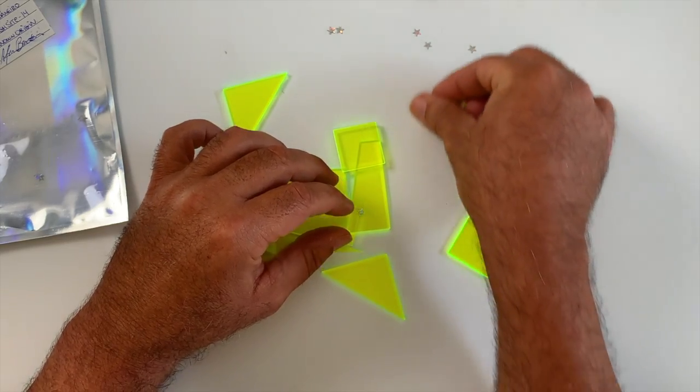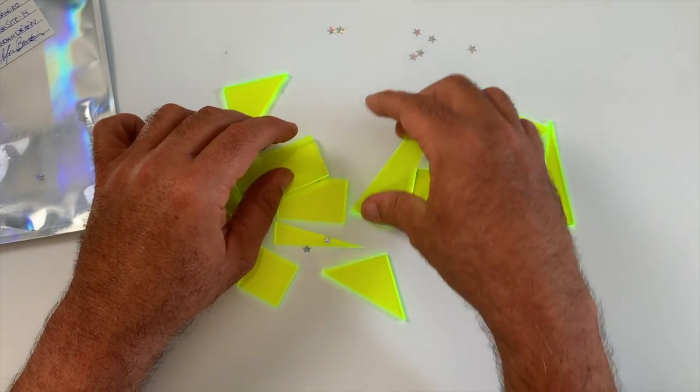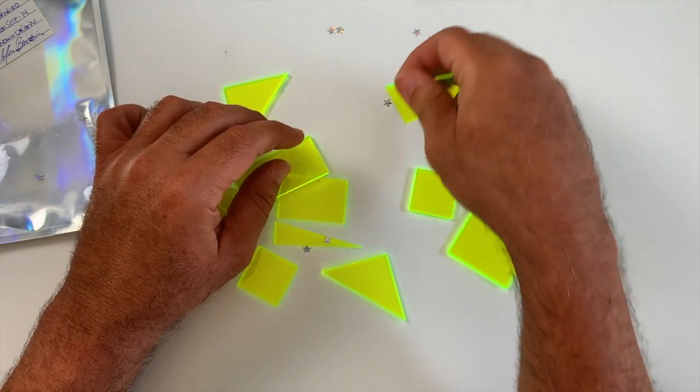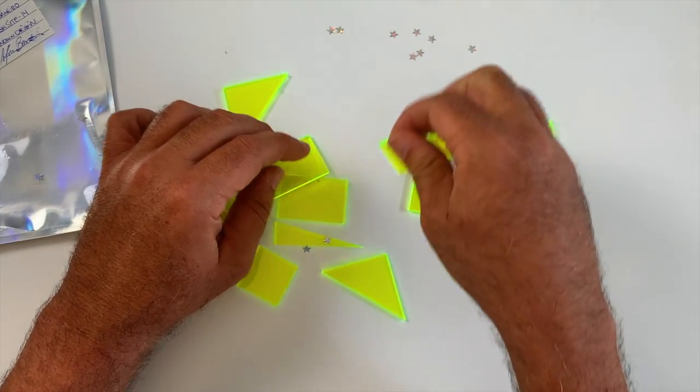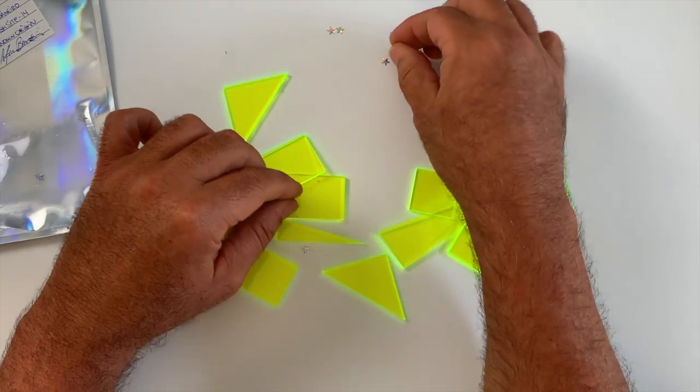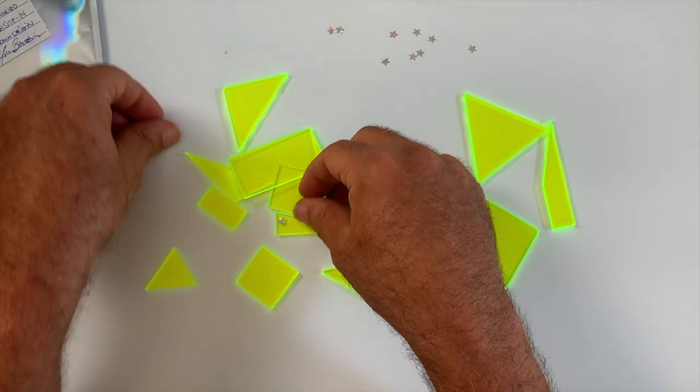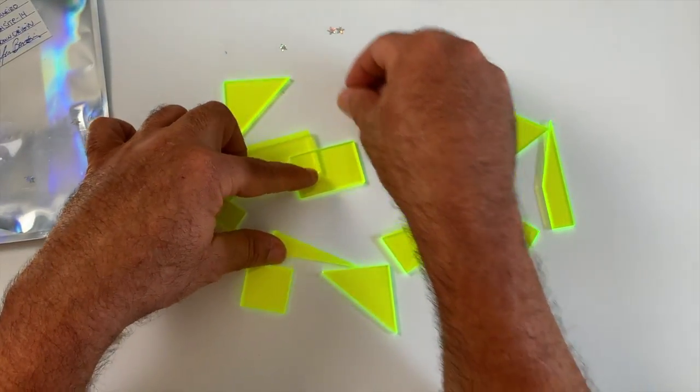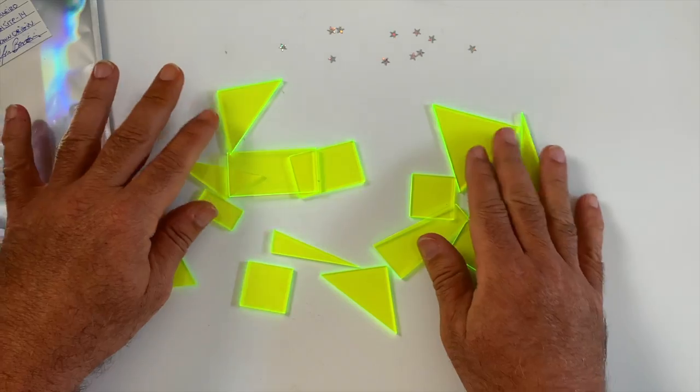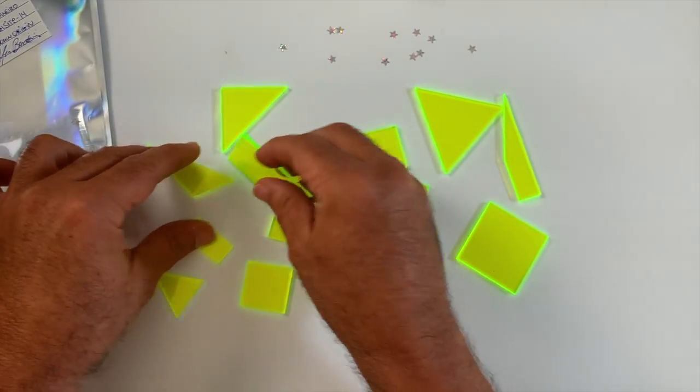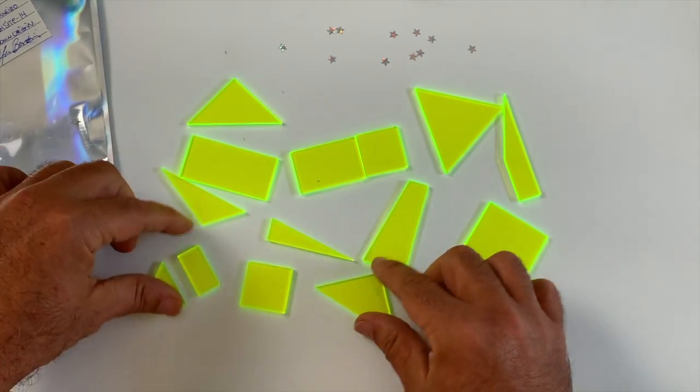Let me move these little glitter stars out of the way here. Man, I'll tell you these glitter stars stick to everything. So we have the 13 pieces clearly visible, and yeah, there are 14 actually pieces and one of them doesn't belong in the puzzle.